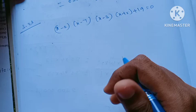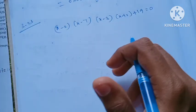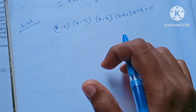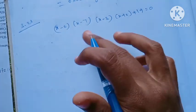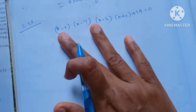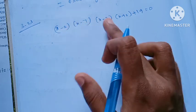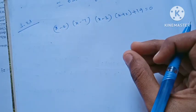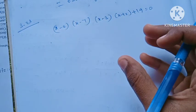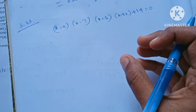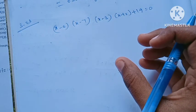In the equation we have 4 brackets, so we have 2-2 pairs, that is 2-2 multiply.